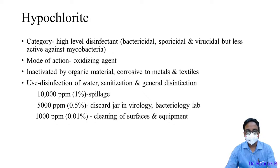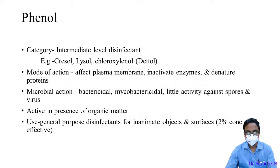For discard jars in bacteriological labs, use 0.5% (5,000 ppm) hypochlorite. For cleaning surfaces and other equipment, use 1,000 ppm (0.1%).